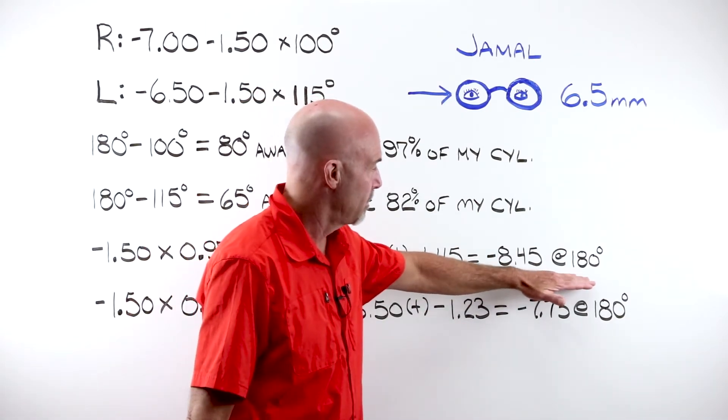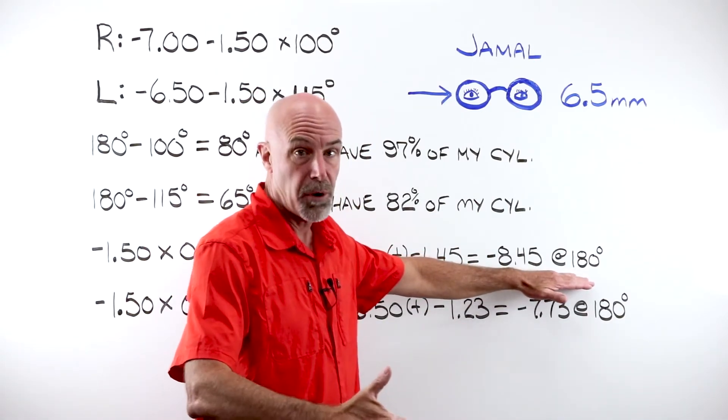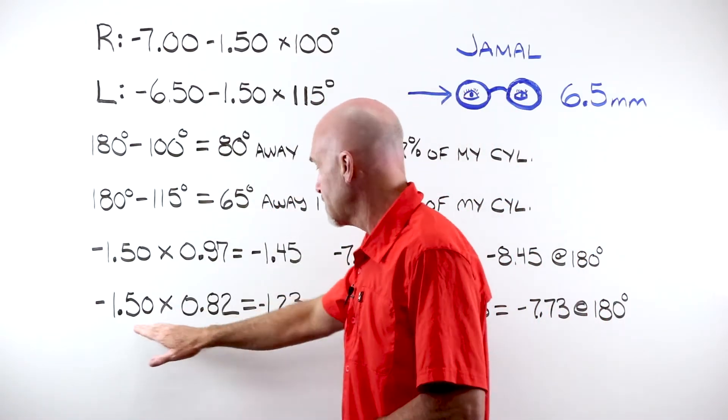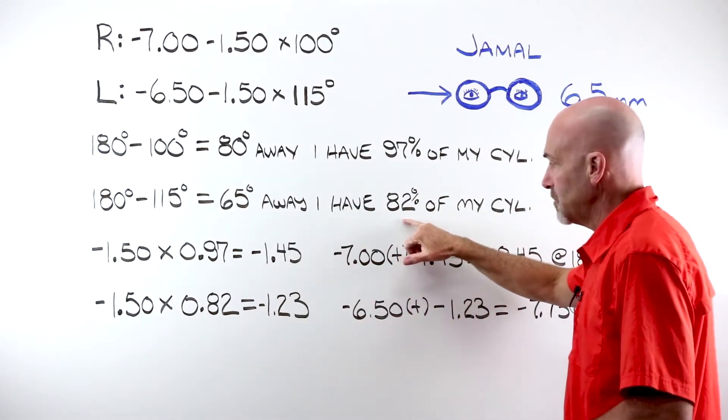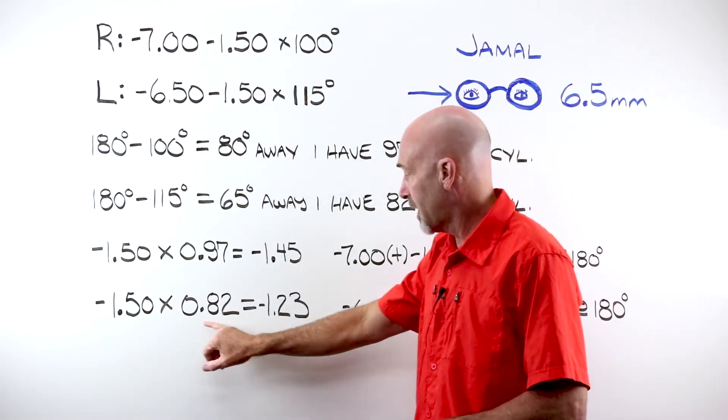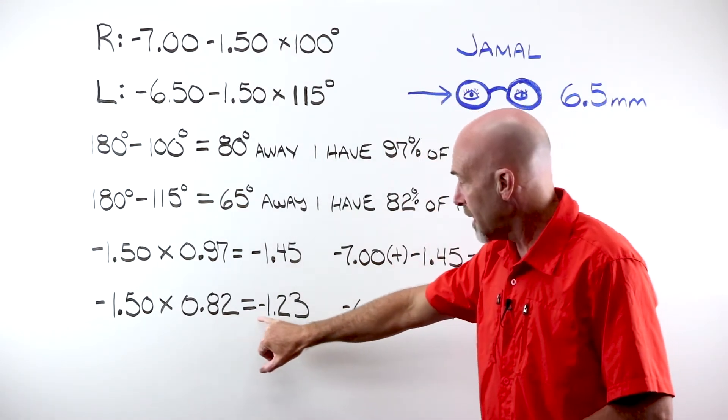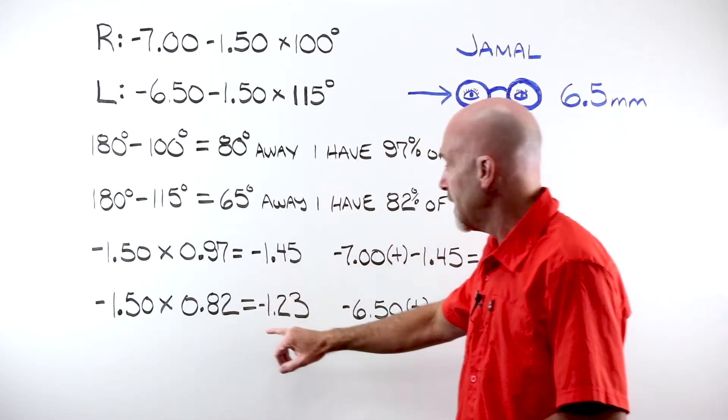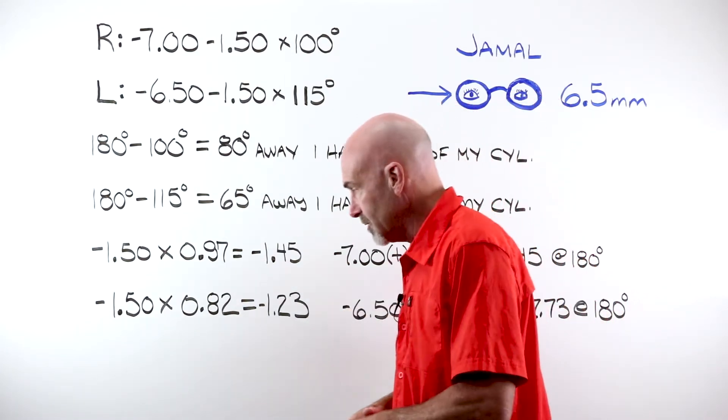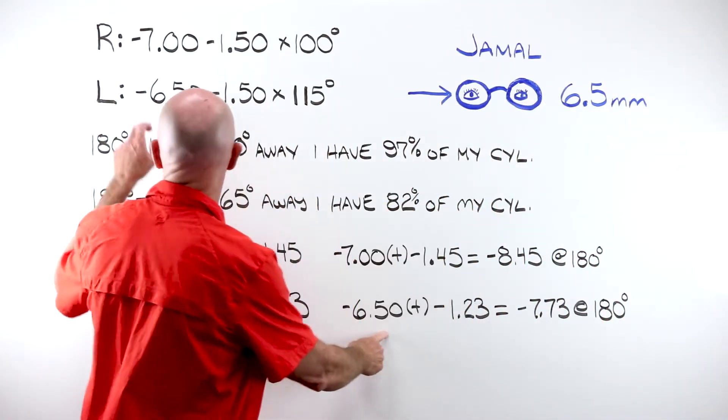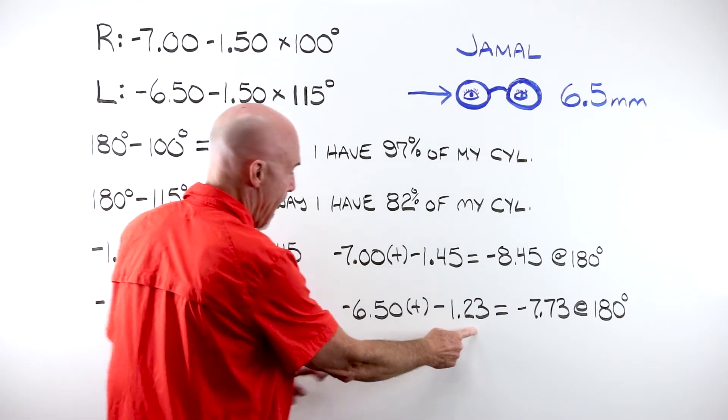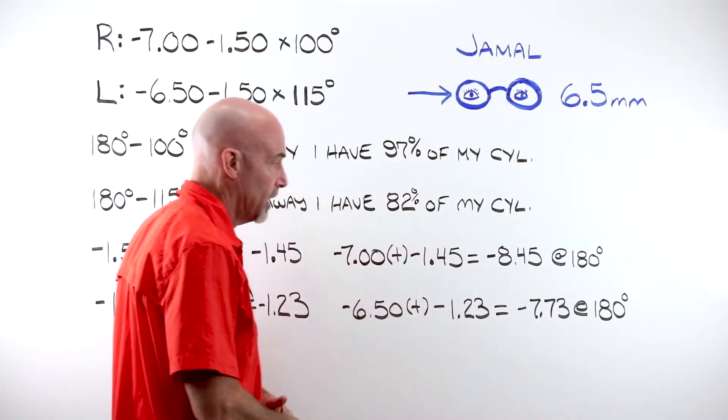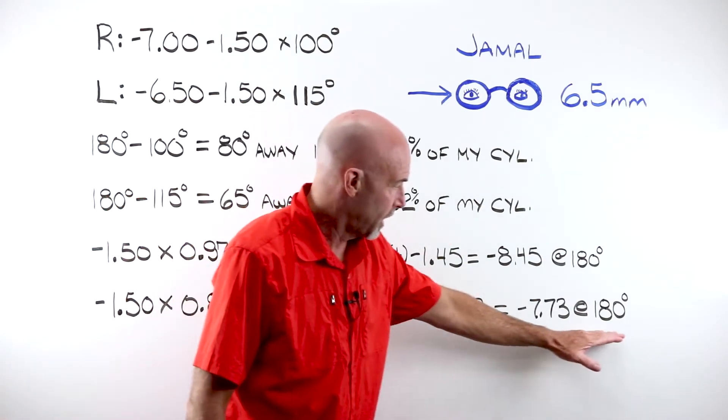If I take my cylinder value of minus 150 from my left and I multiply it times the 82%, or convert it to a decimal, 0.82, looks like I have minus 1.23 of this 150 in play at 180. So now I have to take my minus 650 and add that amount to my sphere of power and I end up at minus 7.73 at 180 degrees.